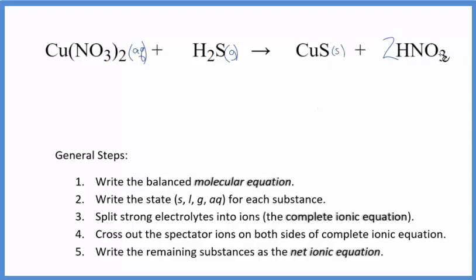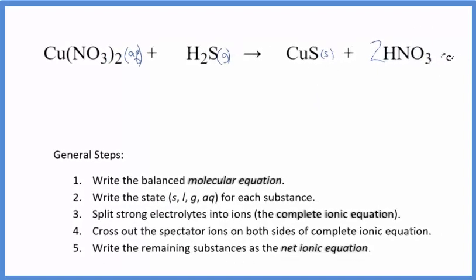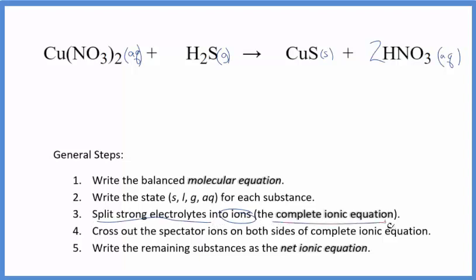And then HNO3 - that's nitric acid, a strong acid. That'll be aqueous. So we have our states. Now we split the strong electrolytes into their ions for the complete ionic equation. We said that nitrate, this whole ion here, is 1 minus.